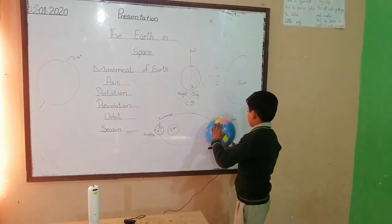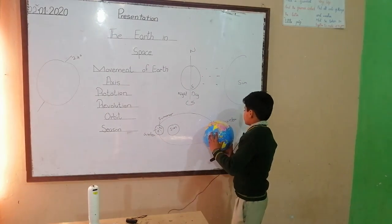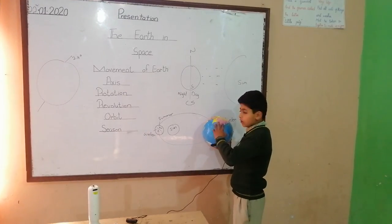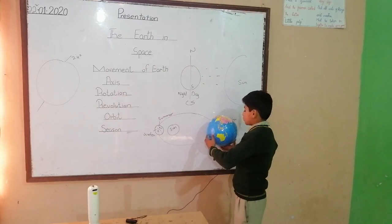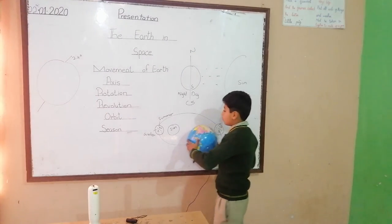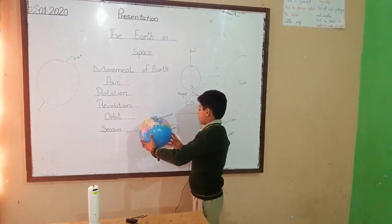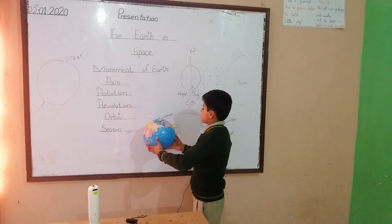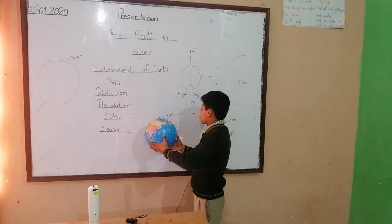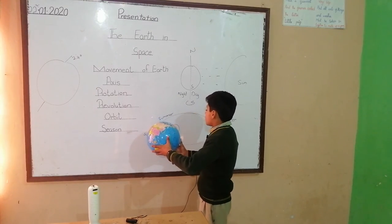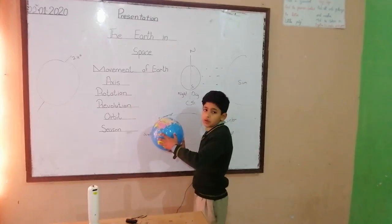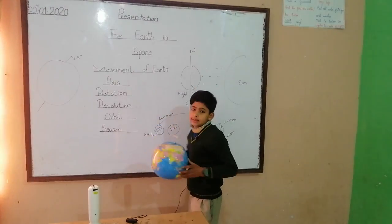When the North Pole of the Earth is tilted away from the Sun, there is winter in that region. When the South Pole faces the Sun, there is summer. As the Earth revolves, the hemisphere facing the Sun experiences summer while the other experiences winter. Thanks.